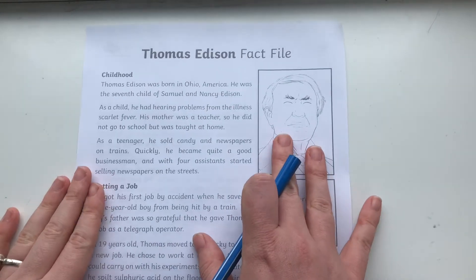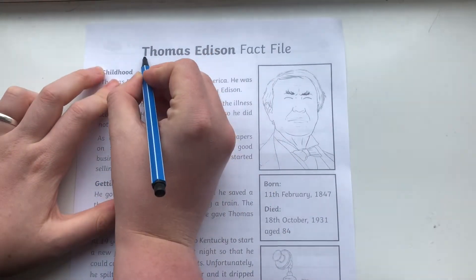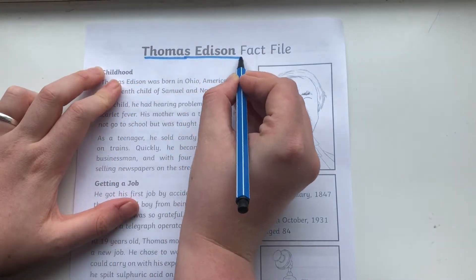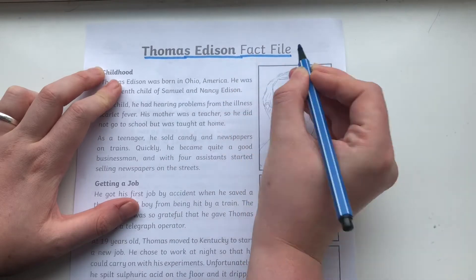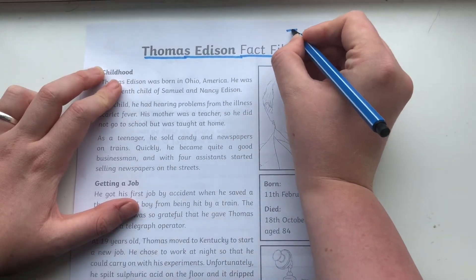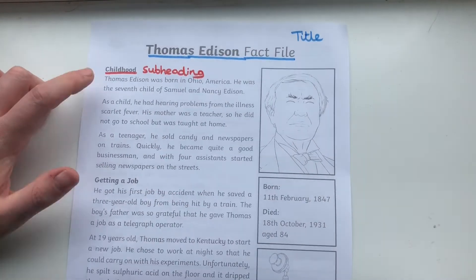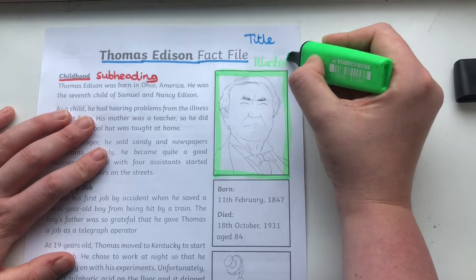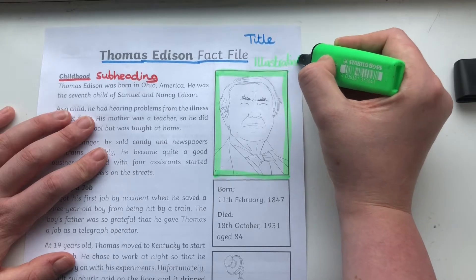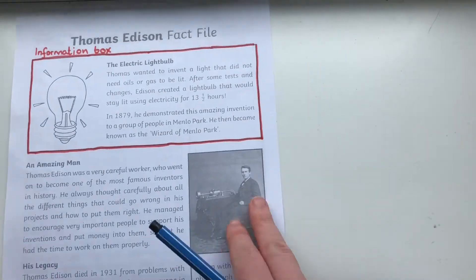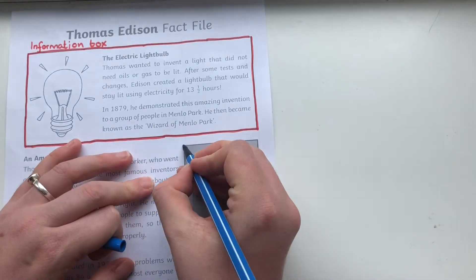Fact Files, or non-chronological reports, are one of the key kinds of writing that pupils look at throughout Key Stage 2. So a good starter activity is to try and label as many features of Fact Files as you can.